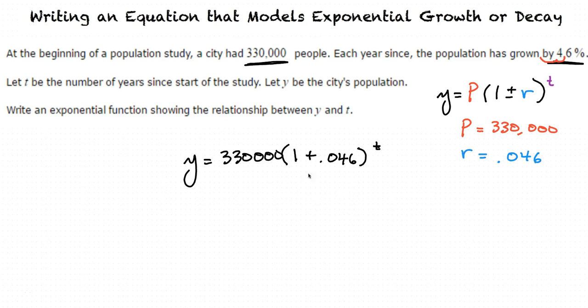And it is 1 plus .046 because we have an exponential growth model because the population is increasing and not decreasing.